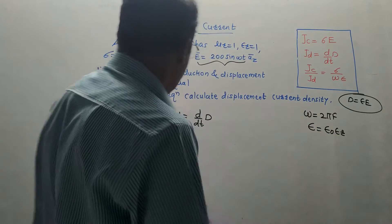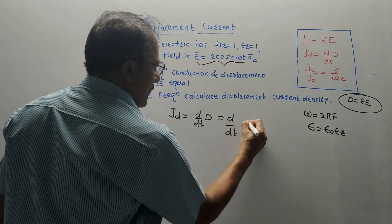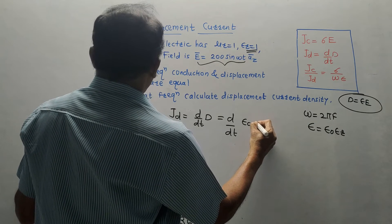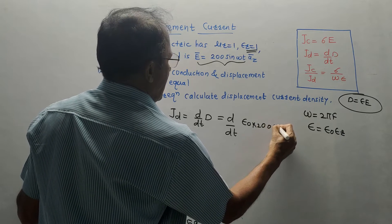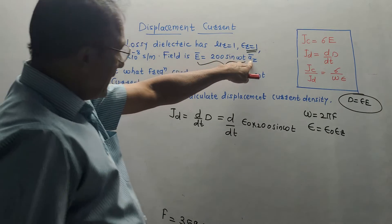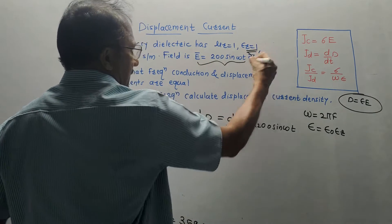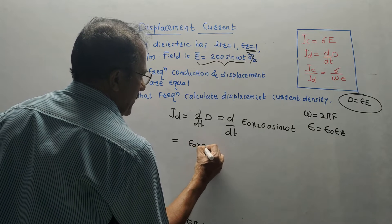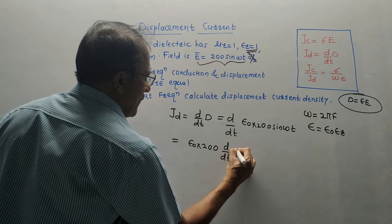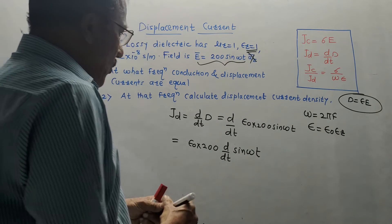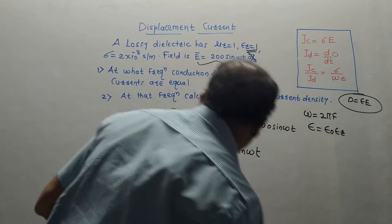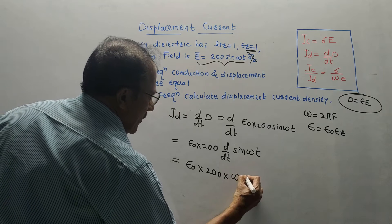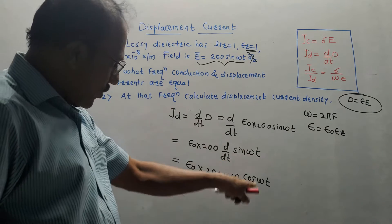Taking the constants outside, we get epsilon_0 times 200 times d/dt of sin(ωt). The derivative of sin(ωt) is ω cos(ωt). So the expression becomes epsilon_0 times 200 times omega times cos(ωt).